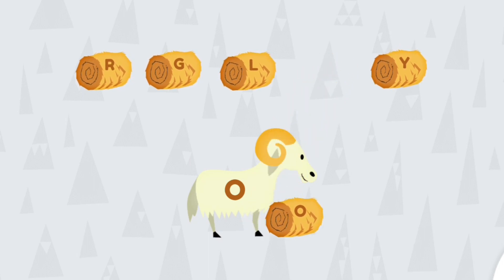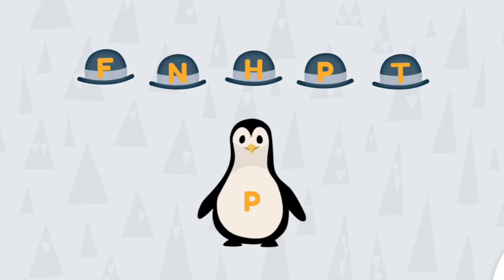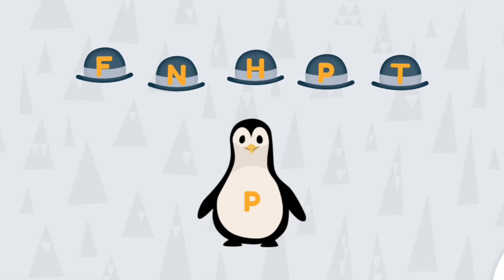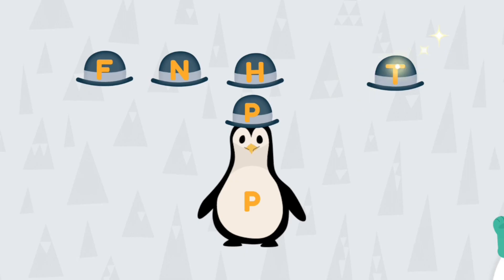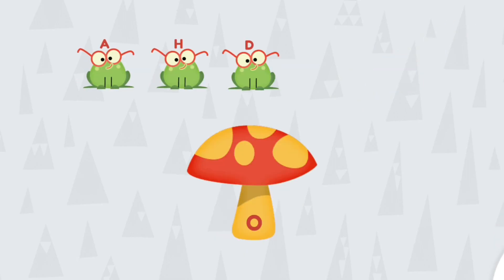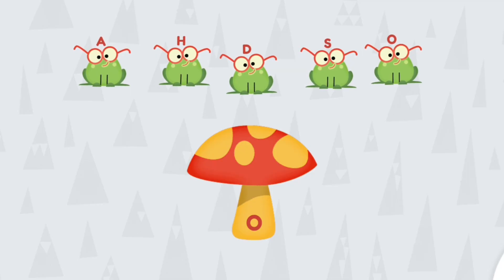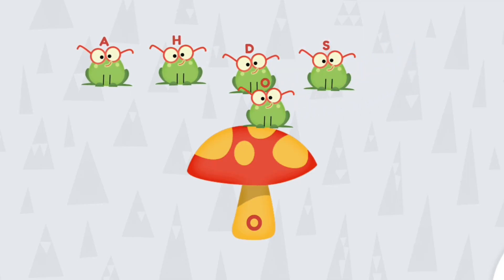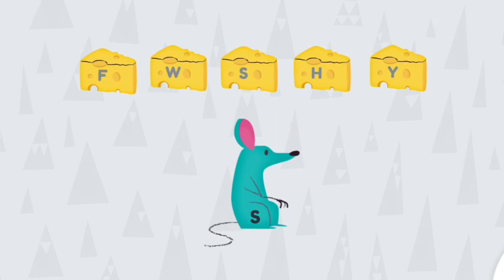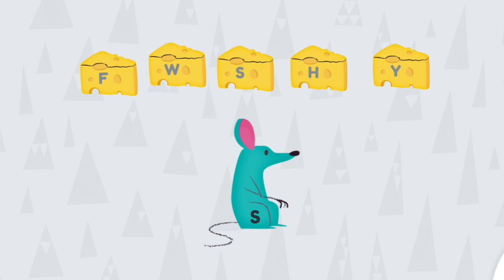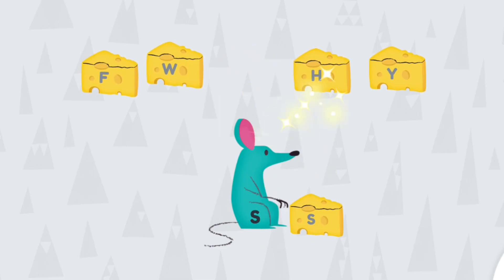Super! Put the hat with the letter P on the penguin. P. Super duper! Put the frog with the letter O on the mushroom. Sweet! Give the rat the cheese with the letter S. S. That's right!